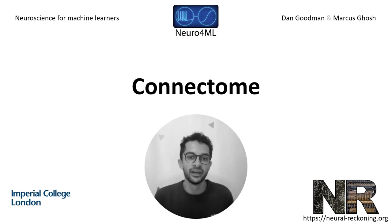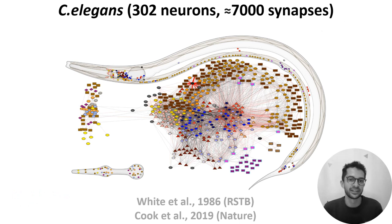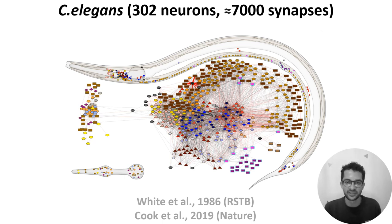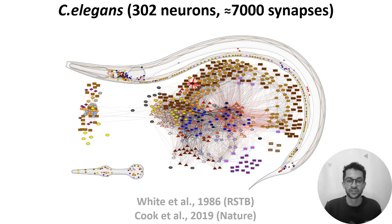To date, only four organisms have a full connectome, the first of which was the roundworm C. elegans. The C. elegans connectome was first completed in 1986 and then updated in 2019. C. elegans are only around 1 mm long, but to obtain the connectome, researchers had to slice the samples into very thin sections around 50 nanometers thick, view each under a microscope, and then trace each neuron's connections through the slices by hand. Once complete, they found the connectivity pattern shown here, which has just 302 neurons and around 7000 synapses.